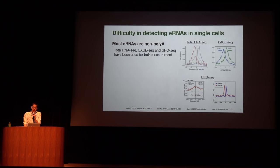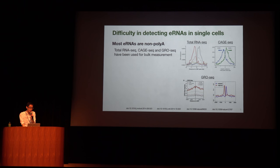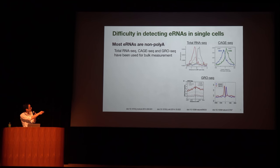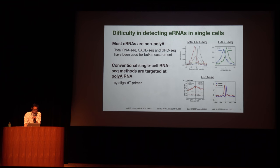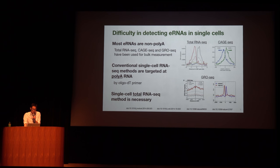However, there is a difficulty in detecting eRNA at the single-cell level. This is because eRNAs are non-polyadenylated RNA. Indeed, when detecting eRNA expression from bulk samples, technologies that can detect non-polyadenylated RNAs are used, such as total RNA-seq, CAGE-seq, and GRO-seq. Unfortunately, conventional single-cell RNA-seq methods are targeted at polyadenylated RNAs because they utilize oligo-dT primers. So, a single-cell total RNA-seq method is necessary to effectively detect eRNAs in single cells.